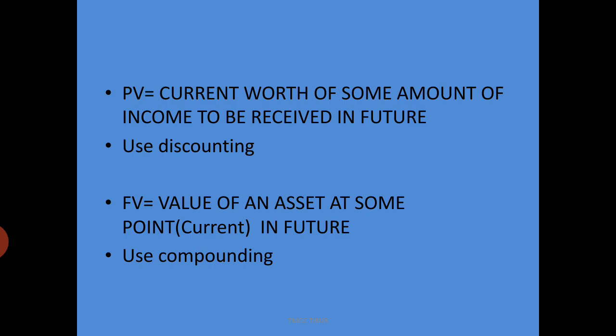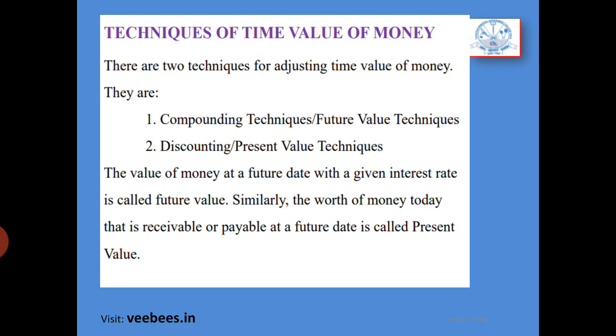Present value (PV) is equal to the current worth of some amount of income to be received in future. For this purpose, we will use discounting. Future value (FV) is the value of an asset at some point in future; for this we use compounding. The techniques of time value of money are: compounding technique (future value technique) and discounting technique (present value technique). The value of money at a future date at a given interest rate is called future value, and the worth of money today that is receivable or payable at a future date is called present value.